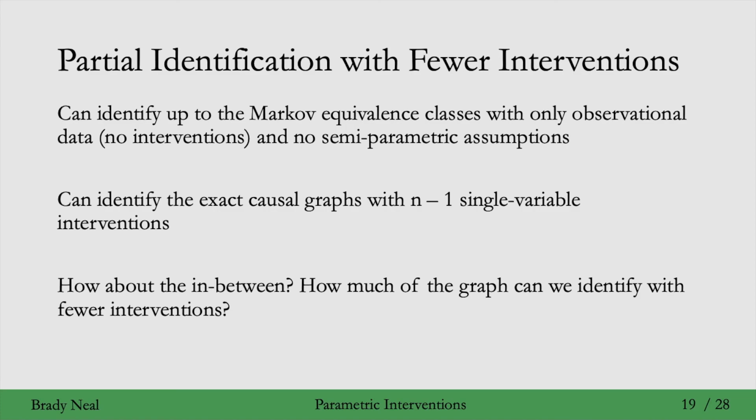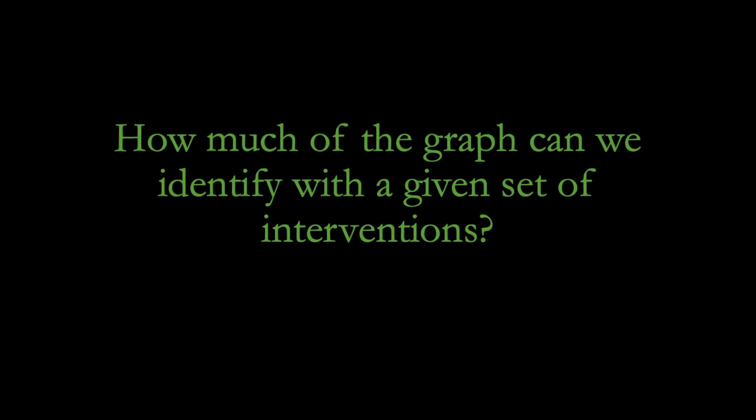The core question is: how much of the graph can we identify with a given set of interventions, not necessarily n-1 interventions?